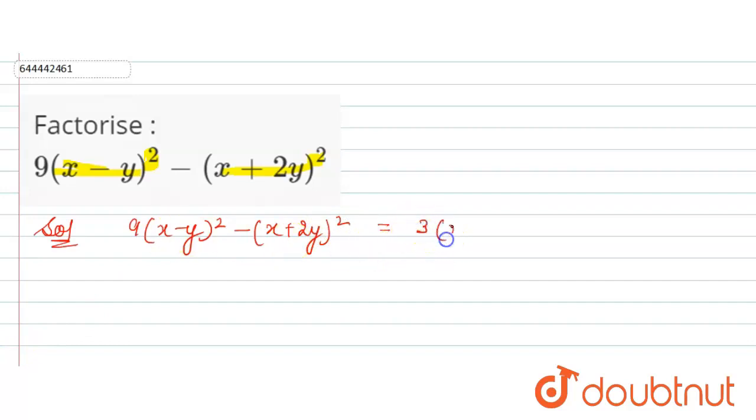So it is [3(x - y)]² - (x + 2y)². Now here we solve it by using the identity a² - b² = (a + b)(a - b).